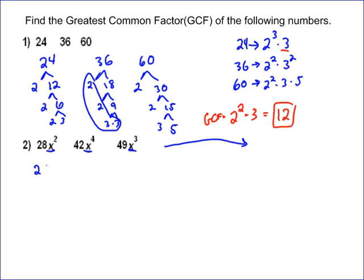So 28, our factor tree does, well, I just start with prime numbers, 2 times 14, and then 2 times 7. So here's our factor tree. Those are all prime numbers. So 28 is 2 squared times 7.